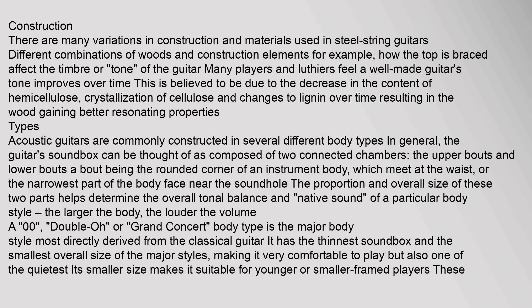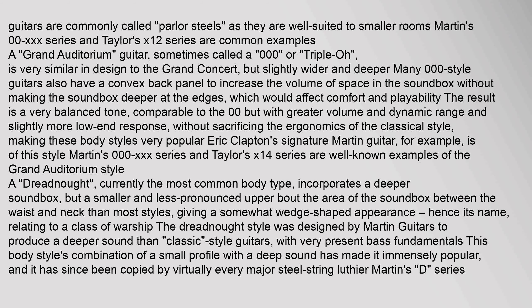The Grand Concert (O) body type is the major body style most directly derived from the classical guitar. It has the thinnest soundbox and the smallest overall size of the major styles, making it very comfortable to play but also one of the quietest. Its smaller size makes it suitable for younger or smaller framed players. These guitars are commonly called parlor steels as they are well suited to smaller rooms. Martin's OOO-X series and Taylor's X12 series are common examples.